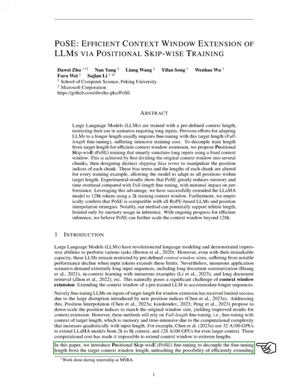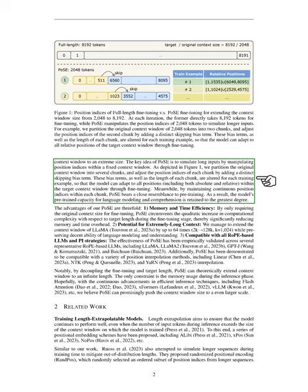In this paper, we introduce a new approach called positional skip-wise, PoSE, fine-tuning. This method separates the fine-tuning length from the target context window length, making it possible to efficiently extend the context window to a much larger size. The main idea behind PoSE is to simulate long inputs by manipulating position indices within a fixed context window. We divide the original context window into several chunks and adjust the position indices of each chunk by adding a unique skipping bias term.